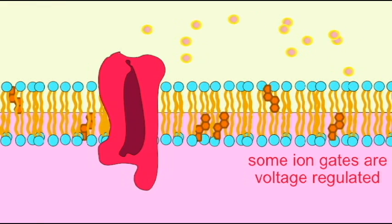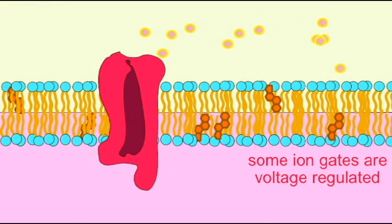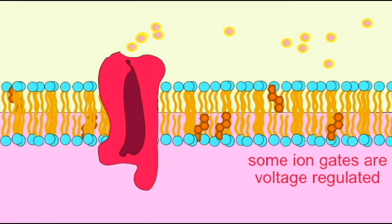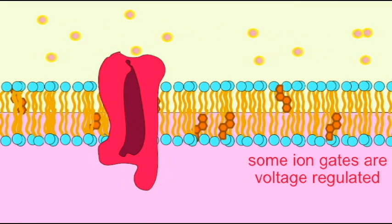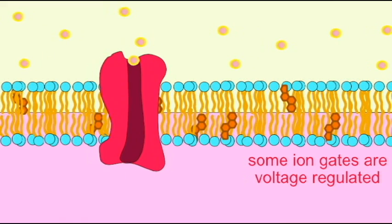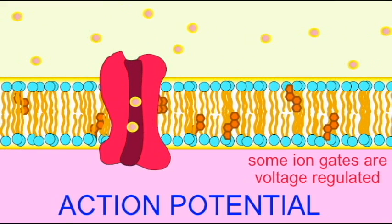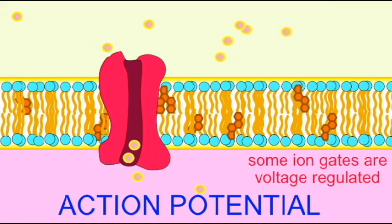The electrical difference across a cell membrane can be changed as ions go from areas of high concentration to low. Some ion gates are voltage regulated so that at the resting membrane potential these gates might be closed.